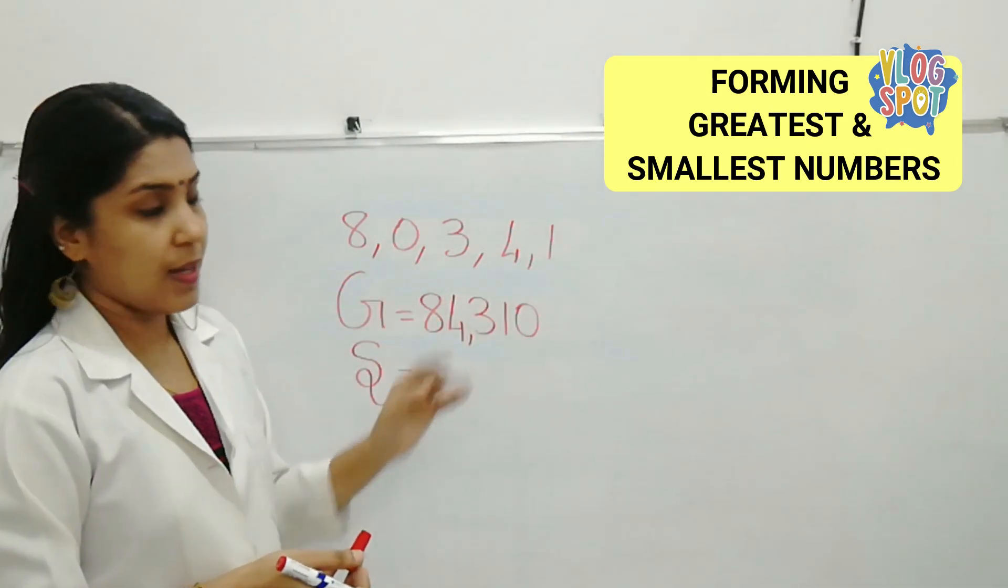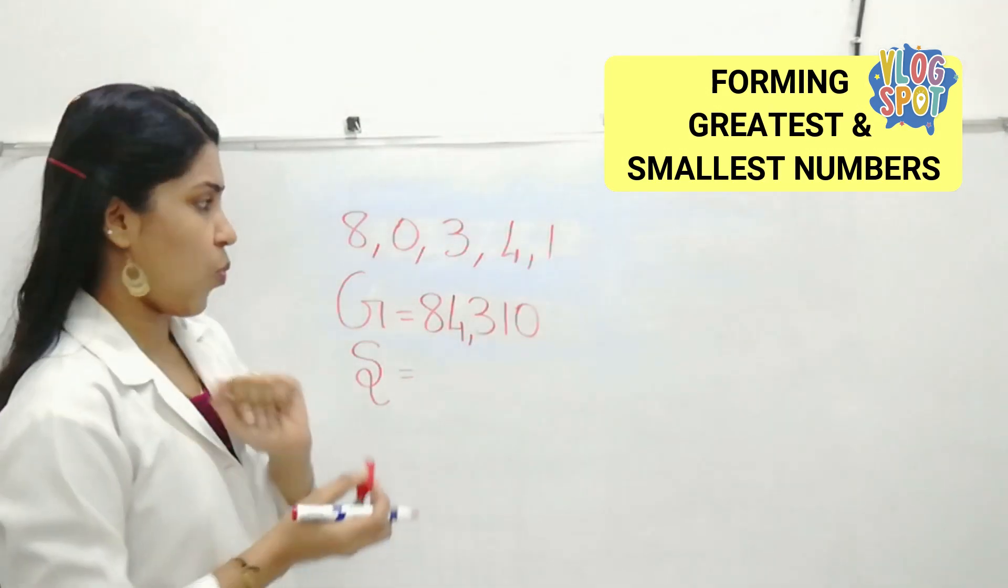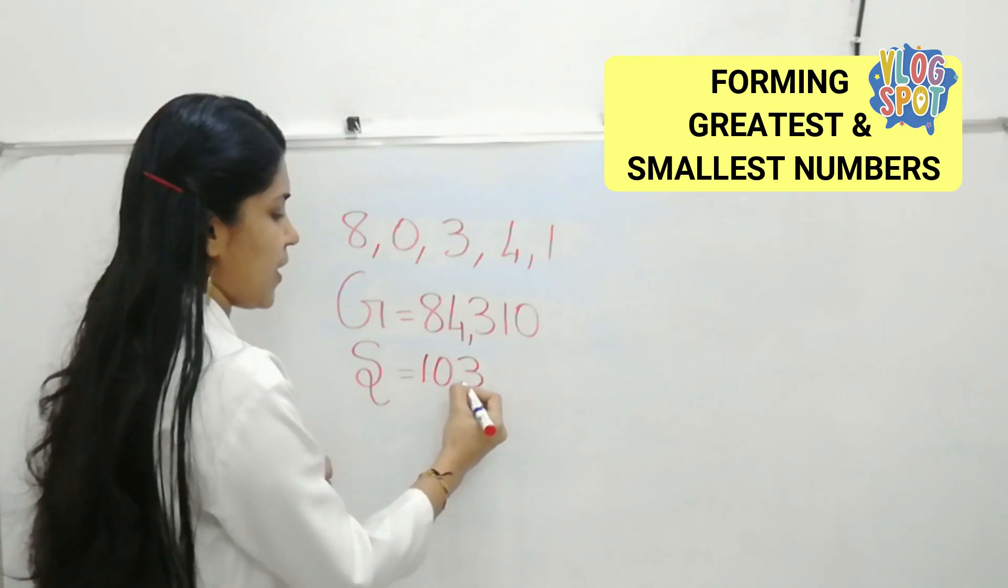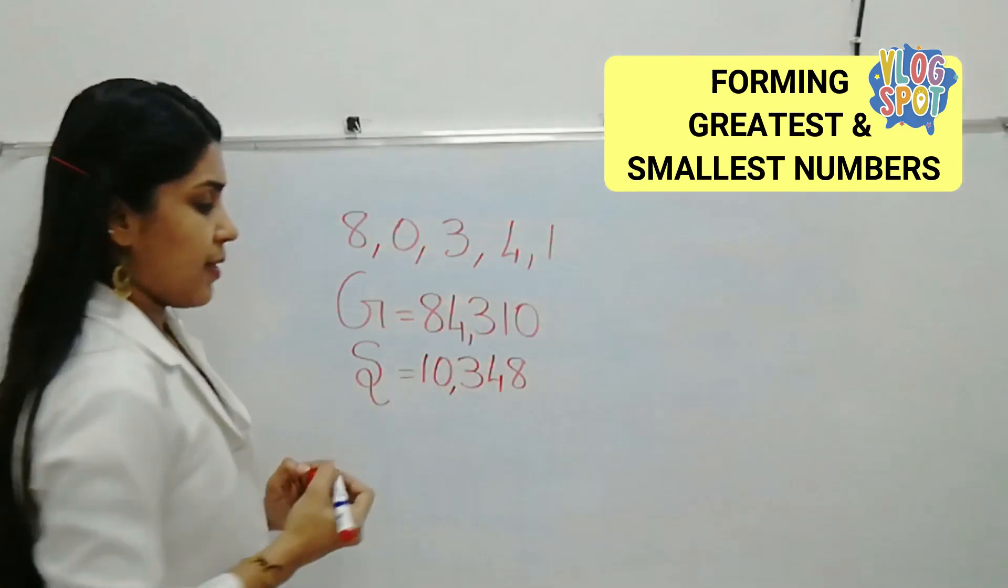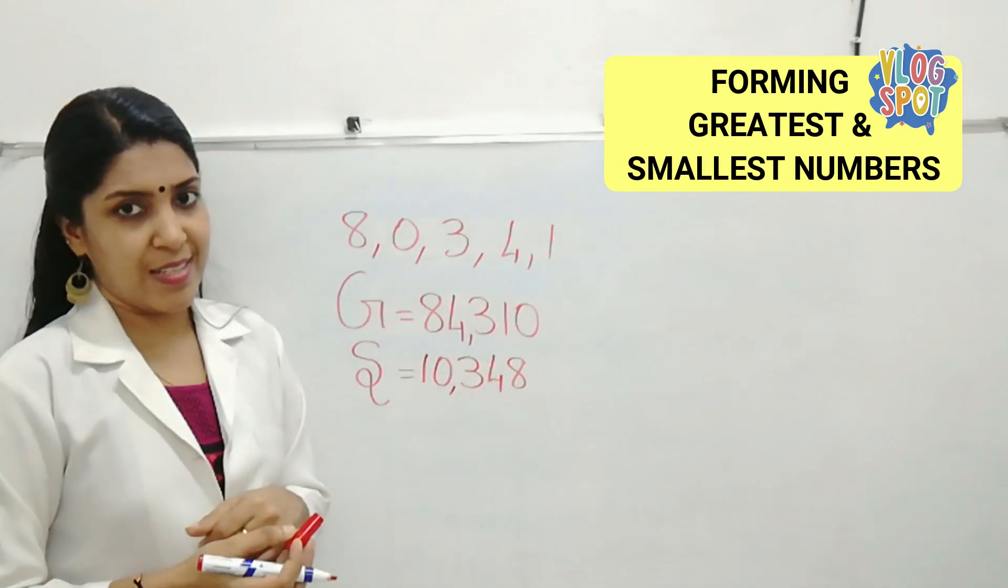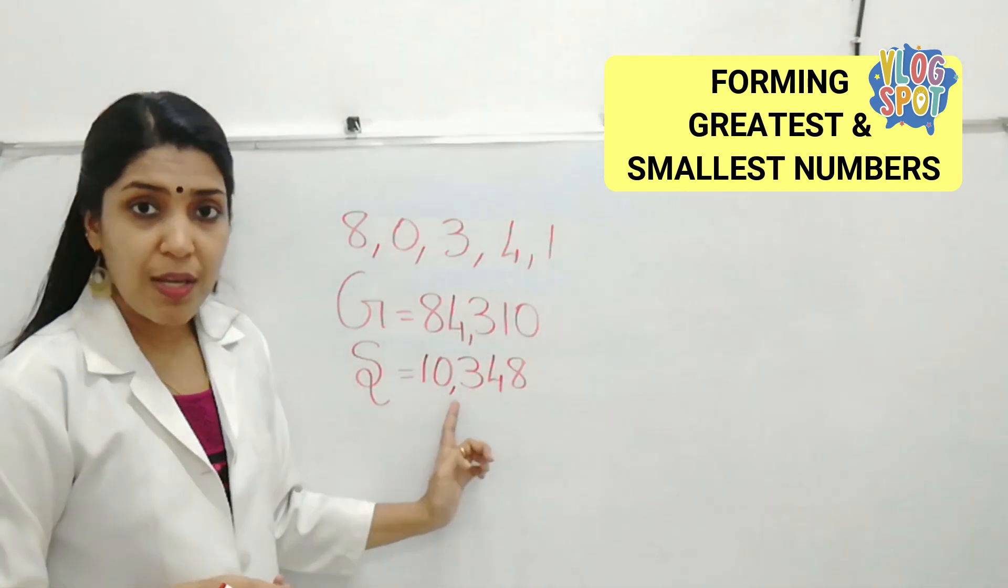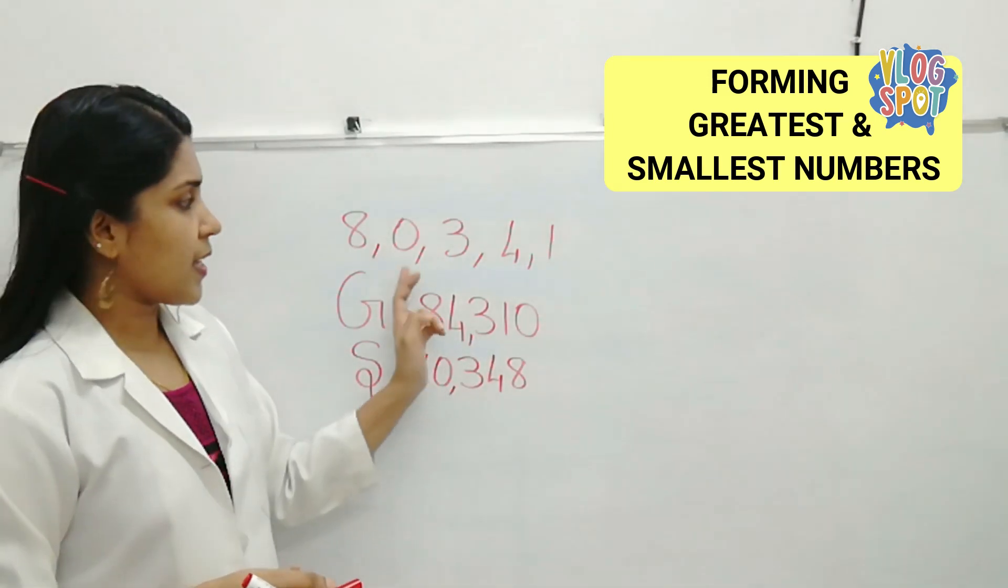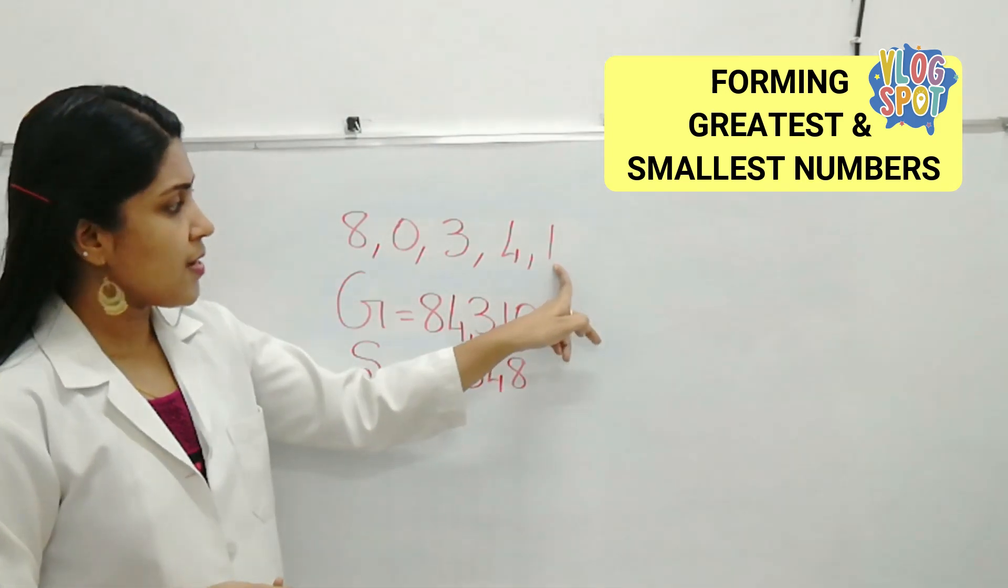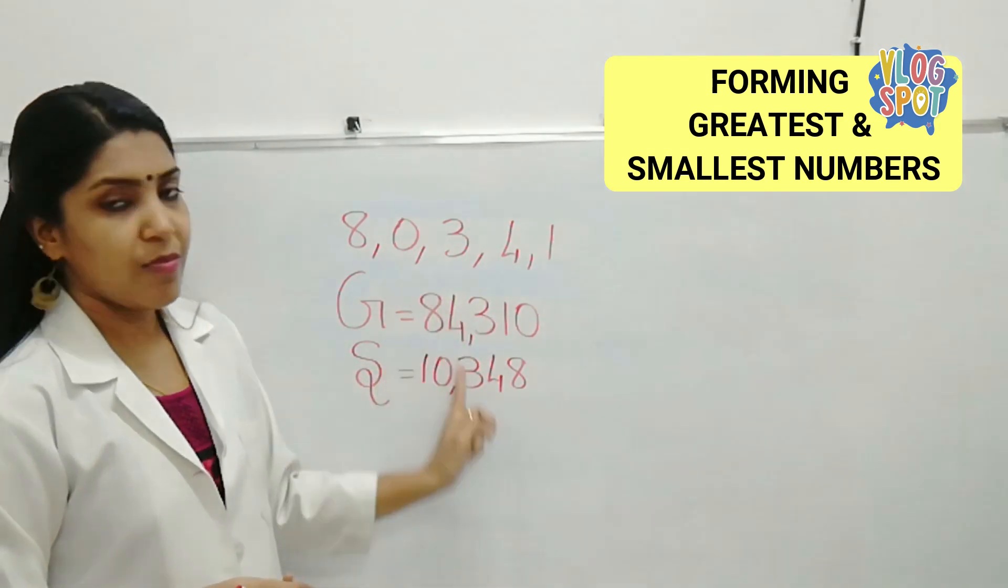Then what will be the first number? Which is the second smallest number here? Yes. It is 1. 1, 0, 3, 4, 8. That means 10,348. Got it? If 0 is there, 0 should come in the second place. The second smallest number should come first. Here, 1 is the second smallest in this row. So, 1 should come first. Then, we can write 0.